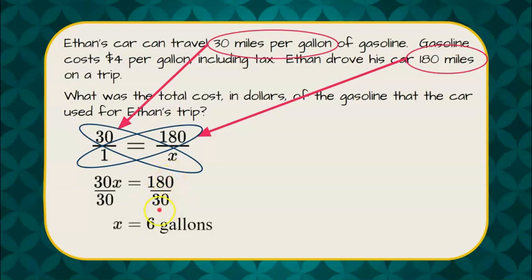We can cross out our zeros. 18 divided by 3 is 6. So 6 gallons of gas were used to go on his 180-mile road trip.